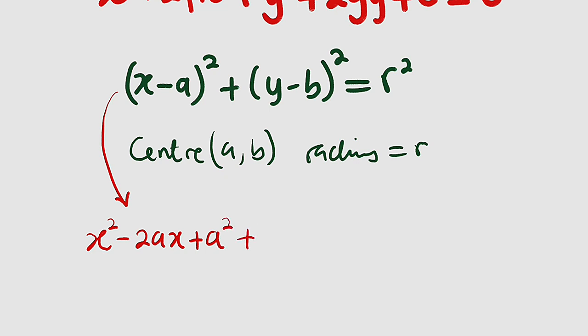Then plus the second bracket we have y squared minus 2by plus b squared. And we can bring r squared inside. It is going to become negative r squared. The whole of this equal to zero.